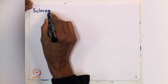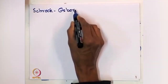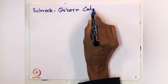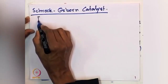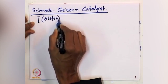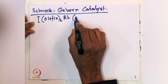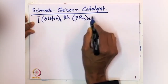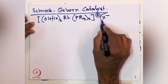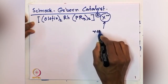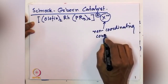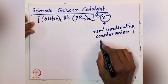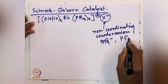The Schrock-Osborne catalyst is a rhodium-based catalyst. Its starting material is important to understand: it contains the rhodium center, two alkyl phosphines, two coordinated olefins, and a counter anion X⁻. The counter anion is a non-coordinating one — such as BF4⁻ or PF6⁻.